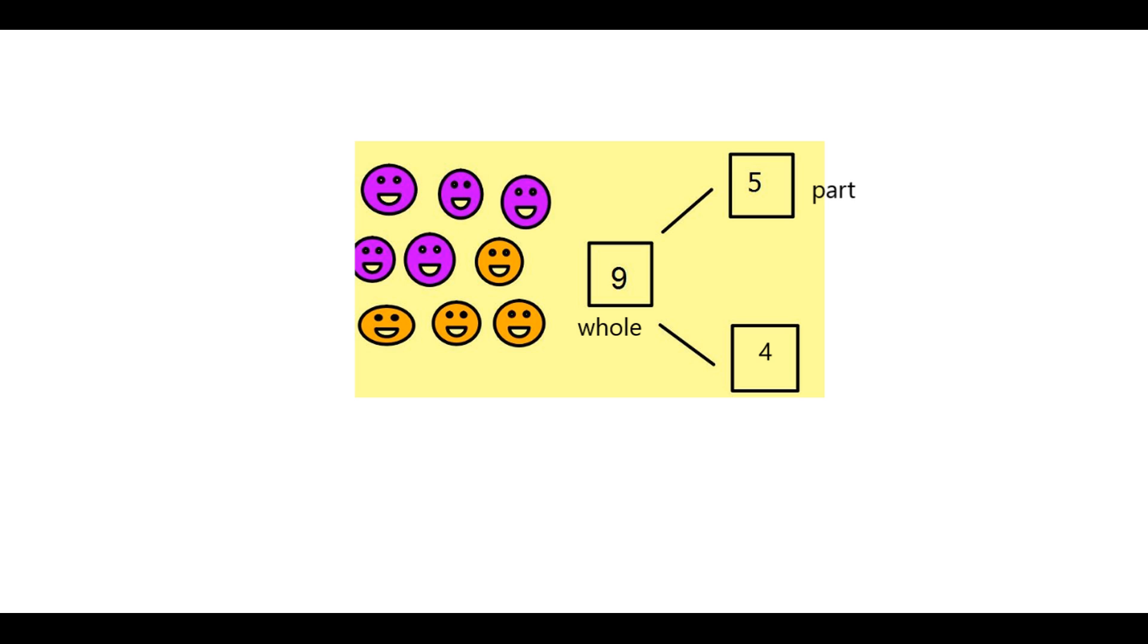And this is another part, I suppose. So I'll just type that there. So you can see here that the whole is nine. And that is made up of two different parts. Five purple faces and four orange faces.